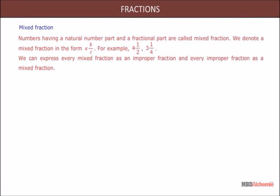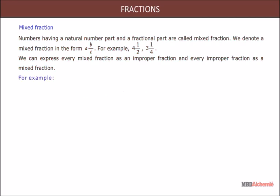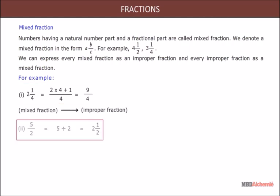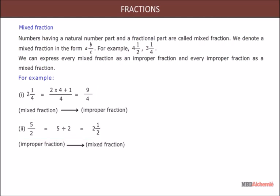Mixed fraction: numbers having a natural number part and a fractional part are called mixed fractions. We denote a mixed fraction in the form A into B upon C. For example, 4 and 1/2, 3 and 1/4. We can express every mixed fraction as an improper fraction and every improper fraction as a mixed fraction. For example, 2 and 1/4 in improper form can be written as 9/4. Improper fraction 5/2 in mixed fraction form can be written as 2 and 1/2.